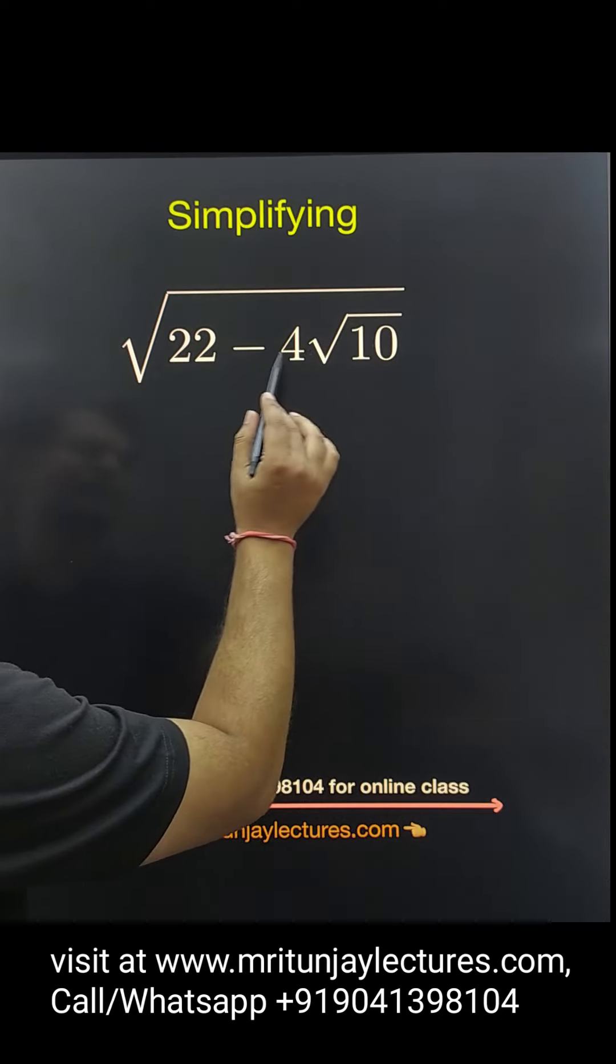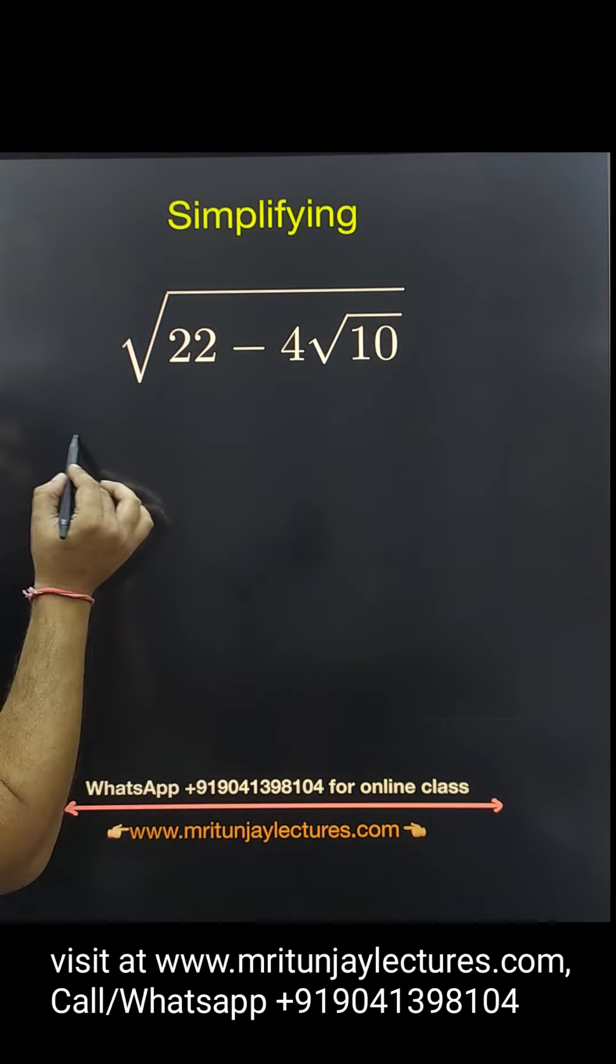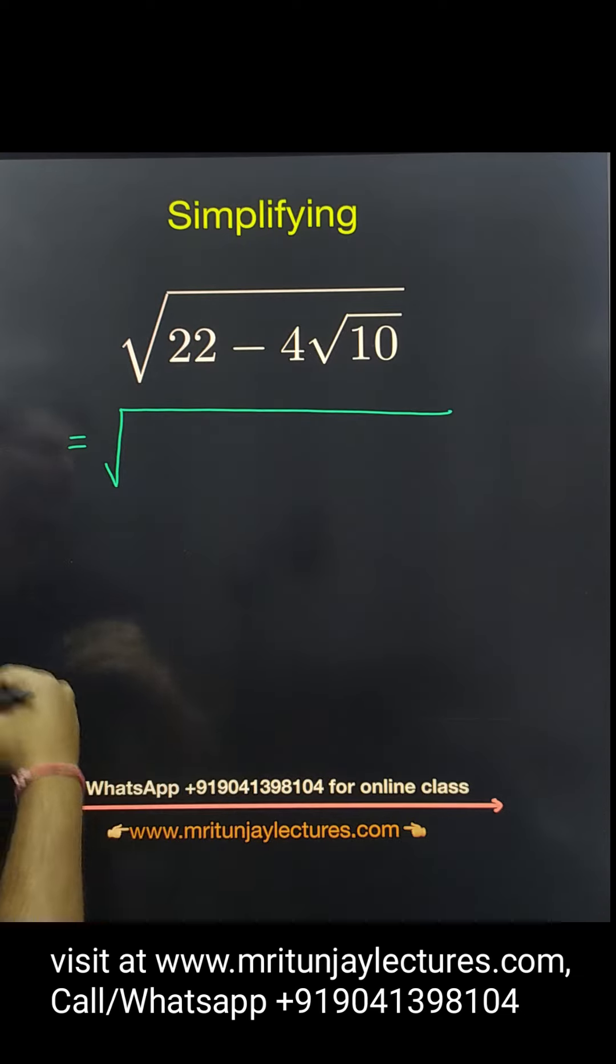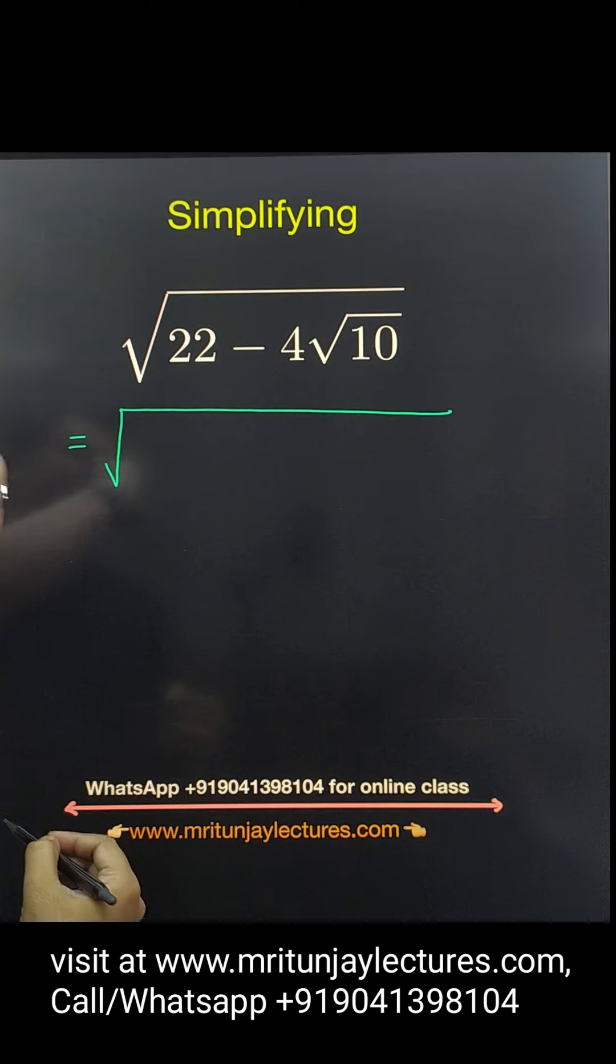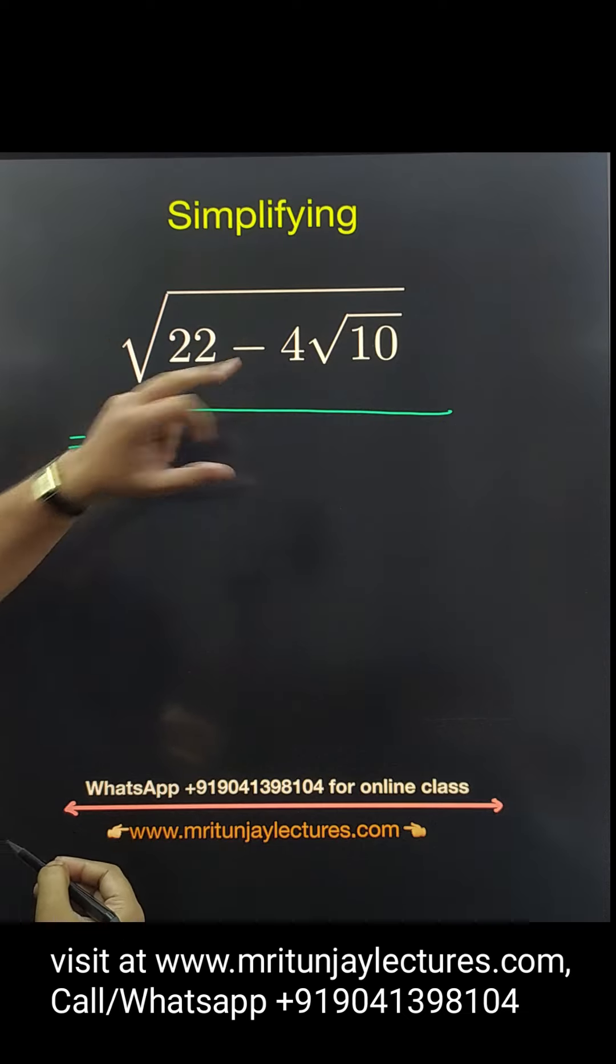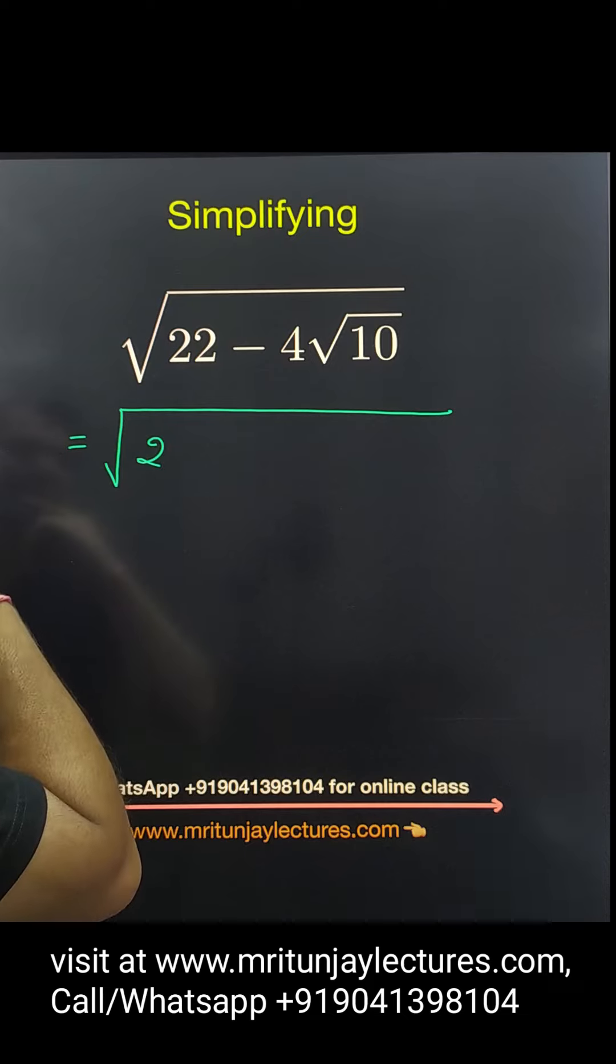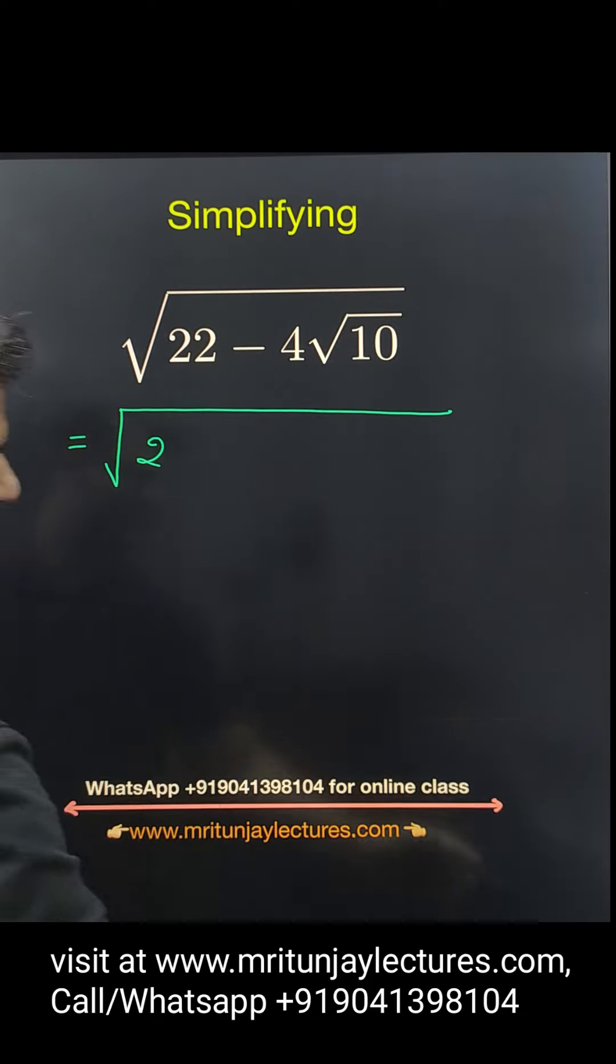Question of the day: square root of 22 minus 4 square root 10. How can we solve this type of problem? Simply, if you see very carefully that is 4, you can write now here 22. So first, basically this one is converted...